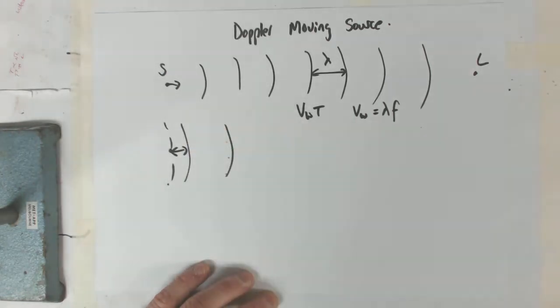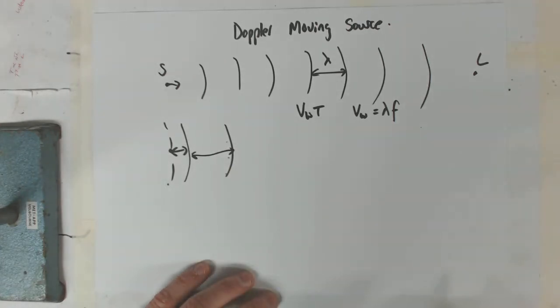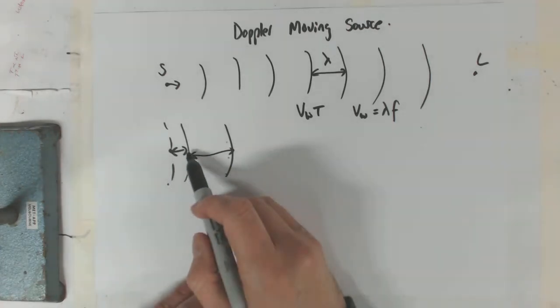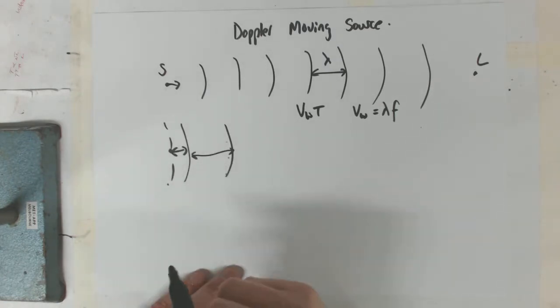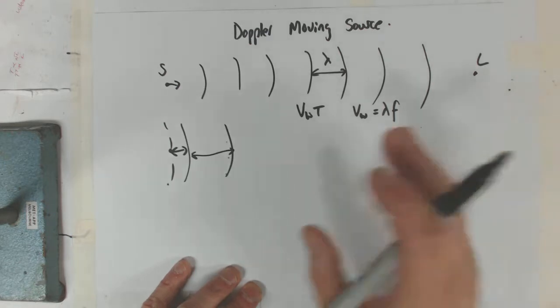So we've got a new wavelength. It's not just a perceived wavelength, it really is a new wavelength because the source has moved before it put out the new wave. In the case where the source is going towards the listener, we're going to get a higher frequency. So let's work out what that's going to mean.